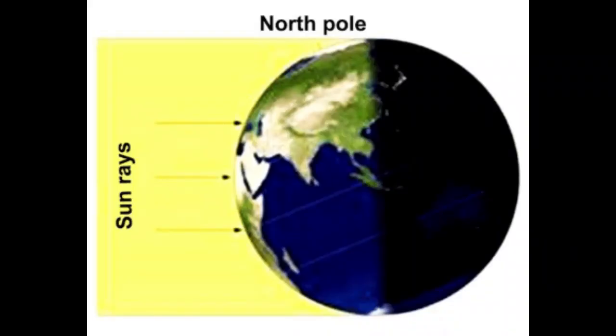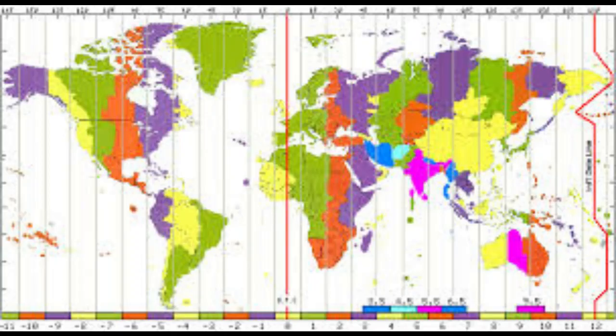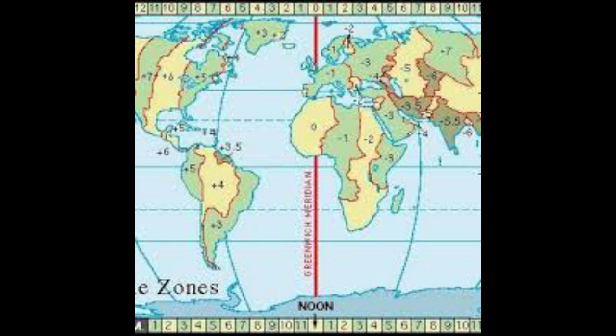The sun does not shine on all parts of the earth at the same time. In 1884, scientists divided the world into 24 time zones. Greenwich, England was chosen to be the location for universal time because it is located along the prime meridian.